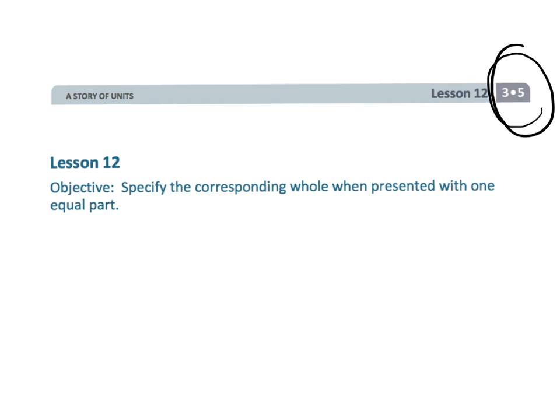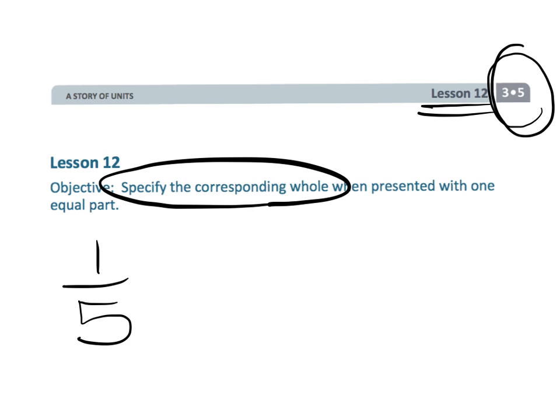All right, this is grade 3 module 5 lesson 12 and in this lesson students are going to be given a fraction and then they have to identify what would the whole look like if they're given a particular fraction. So let's get started on that.